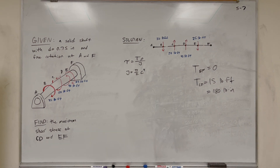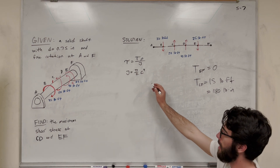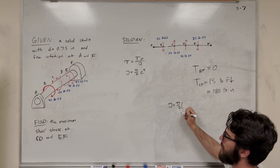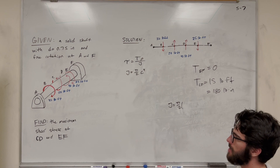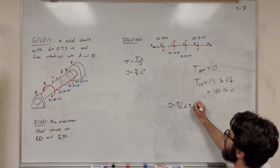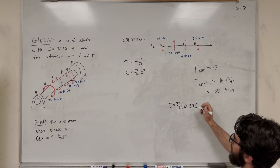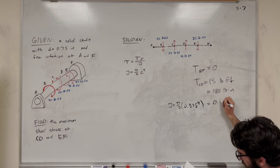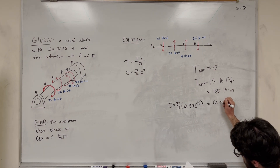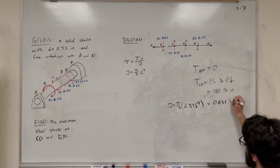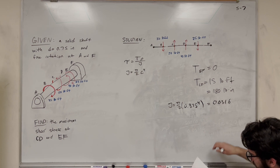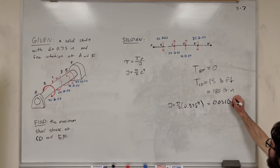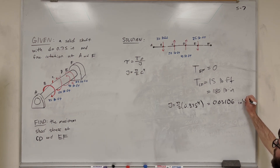The last thing we need is our polar moment of inertia J. To solve for J, it's going to be pi over two, and then C is our radius — so our radius is 0.375, that's diameter divided by two — raised to the fourth. You get 0.03106 inches to the fourth.